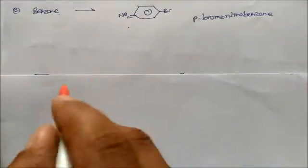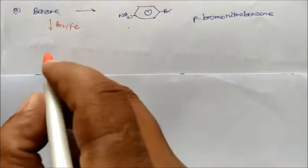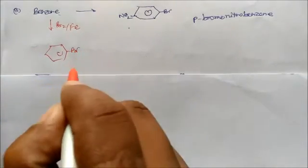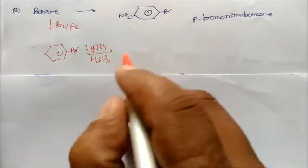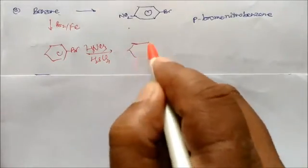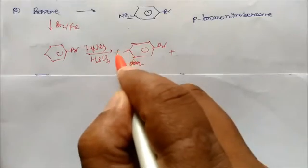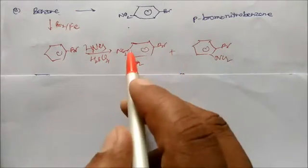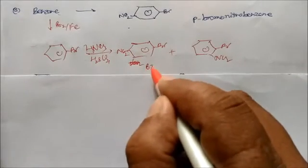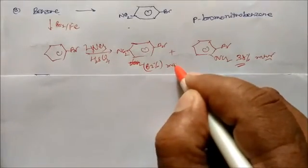Next is benzene to para-bromonitrobenzene. First give Br2 in presence of iron catalyst in dark — you get bromobenzene. Then give nitration with HNO3 in H2SO4 — you get two products: ortho-bromonitrobenzene (38%, minor) and para-bromonitrobenzene (62%, major).